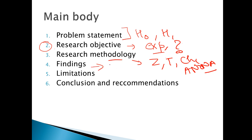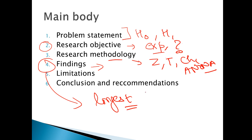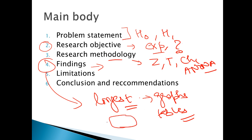Then findings — remember, findings is the longest section of the report, the biggest part. You have to make large tables and graphs. You write everything in detail, page by page. After findings comes the limitation section, because every research has limitations. The researcher themselves will state: my research has this limitation.